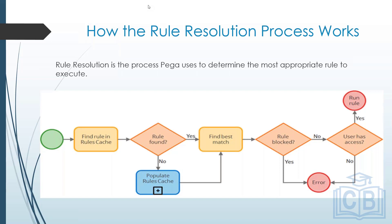The first time you run the application, the rules cache is empty, so the system identifies the correct rule for every instance and places it in the cache. Later, when you create more rules, the cache is already generated and the system only needs to handle newly created rules — it doesn't need to regenerate the entire application's cache.